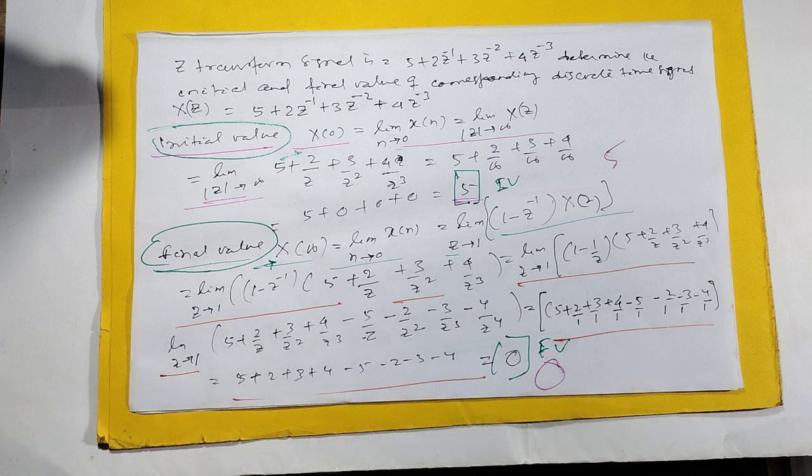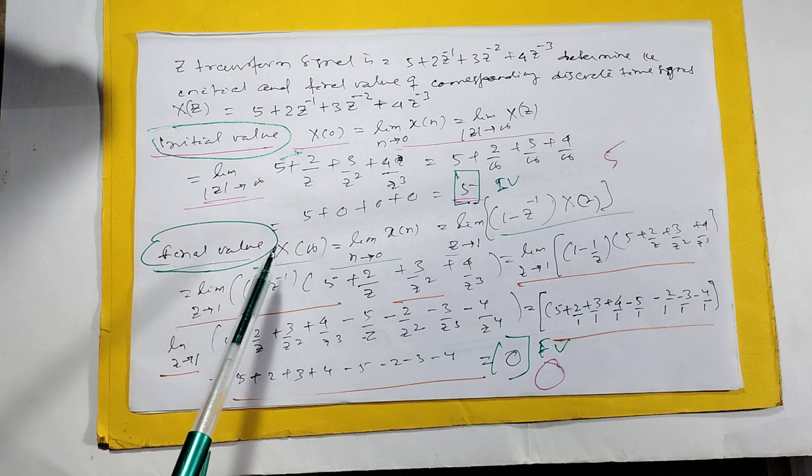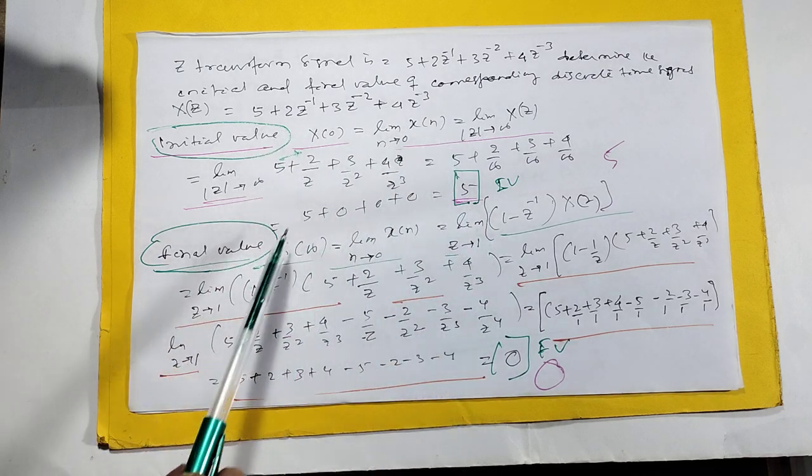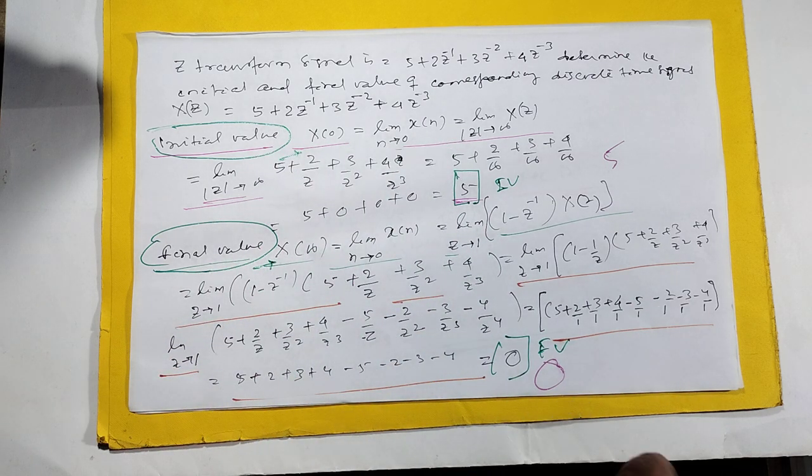Automatically answer will come 0. So initial value is 5, final value is 0. Most important, you should know this equation, this equation, and this equation. Others are very easy. Completed.